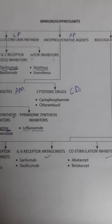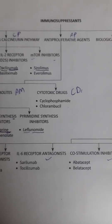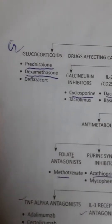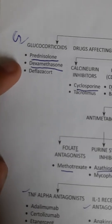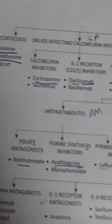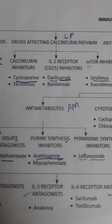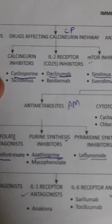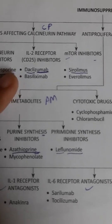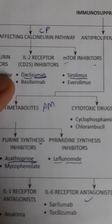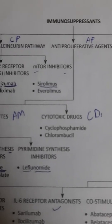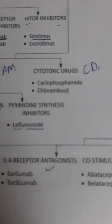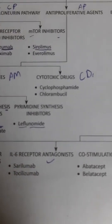Today in this video we'll learn about immunosuppressants. Immunosuppressants include glucocorticoids like prednisolone and dexamethasone, drugs affecting the calcineurin pathway like calcineurin inhibitors cyclosporine and tacrolimus, interleukin-2 receptor inhibitors like daclizumab, mTOR inhibitors like sirolimus, and antiproliferative agents like cytotoxic drugs such as cyclophosphamide.